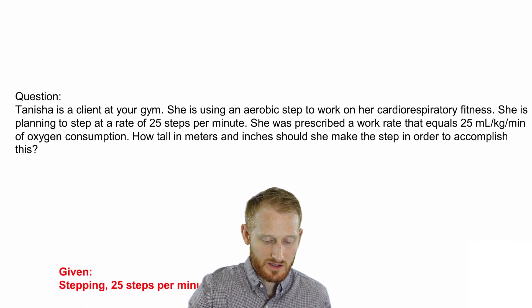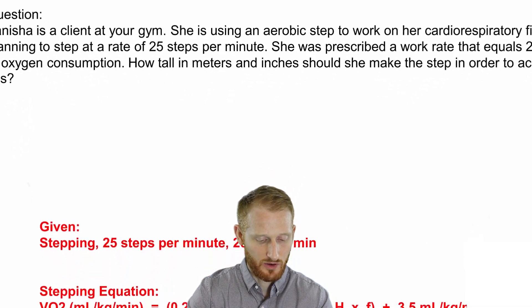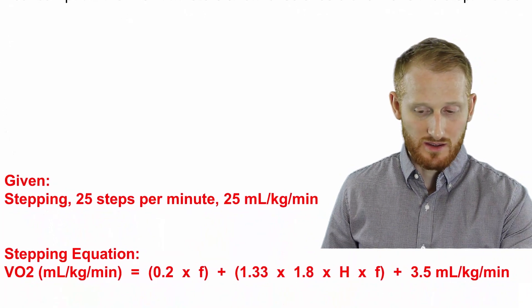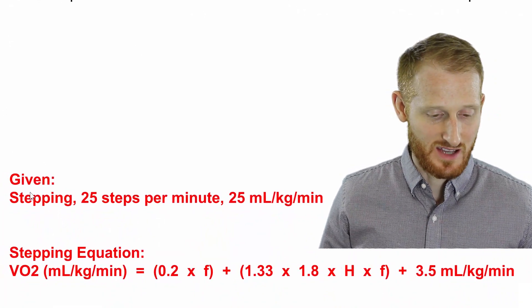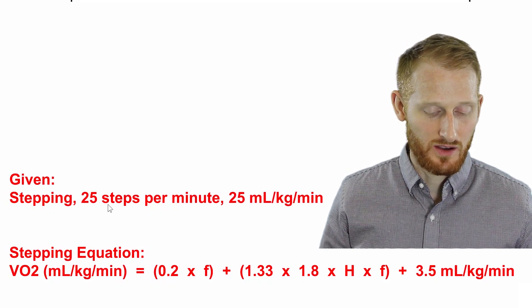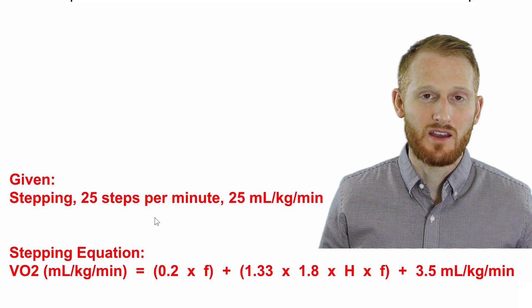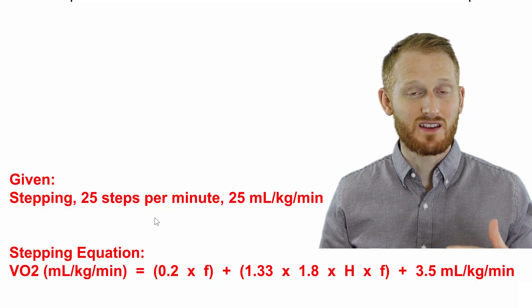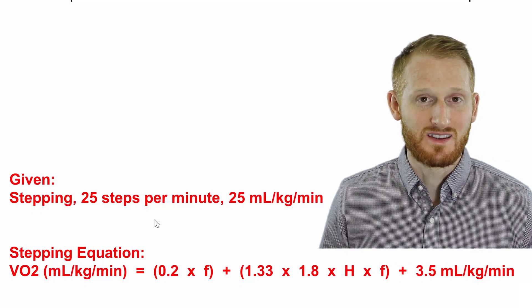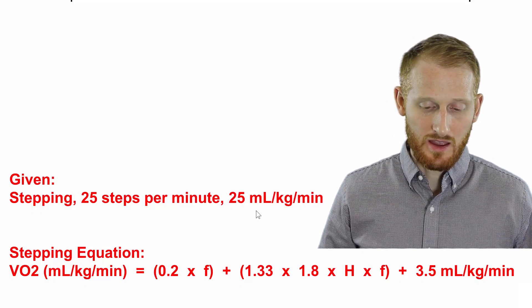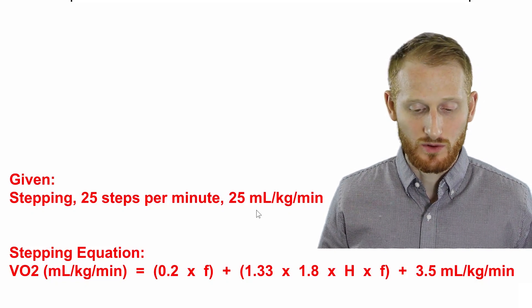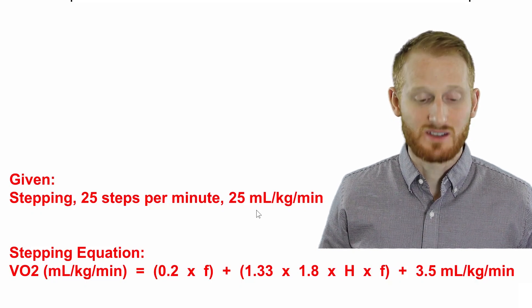So let's look at our given variables. We have the activity that we're going to be doing, which is stepping, which tells us which equation that we need to use. We have 25 steps per minute as the frequency that she's going to go up and down the steps. So each time up and down, that is the number of steps she's doing. And then we have 25 milliliters of oxygen per kilogram of body mass per minute for the oxygen consumption rate.